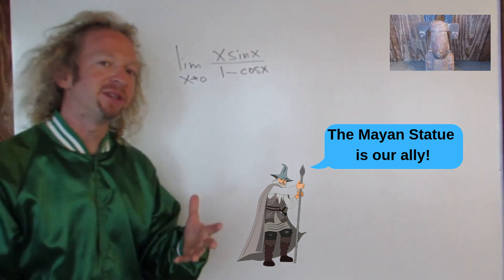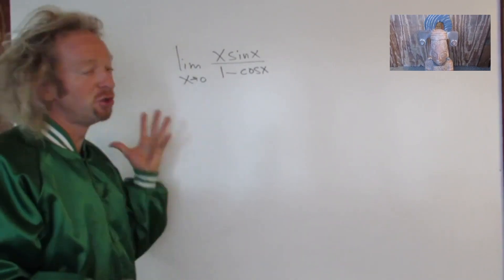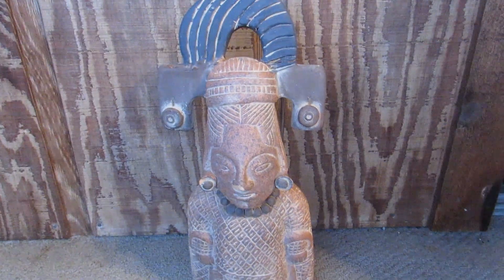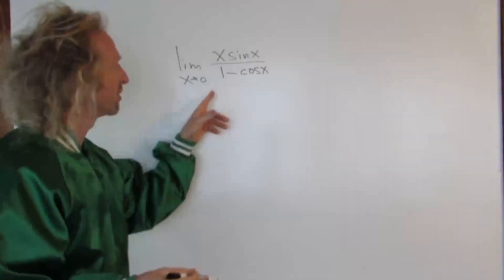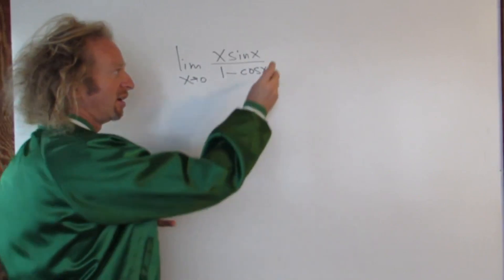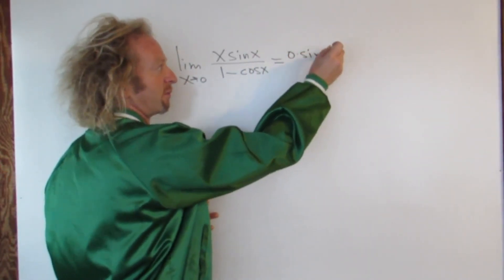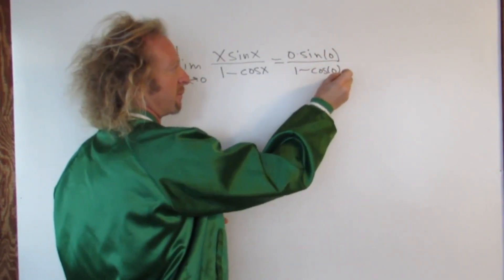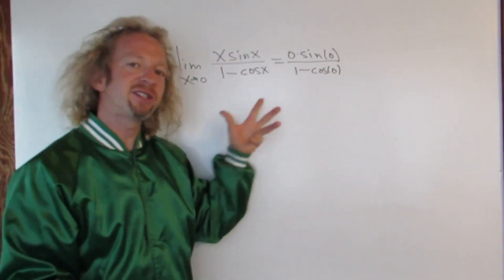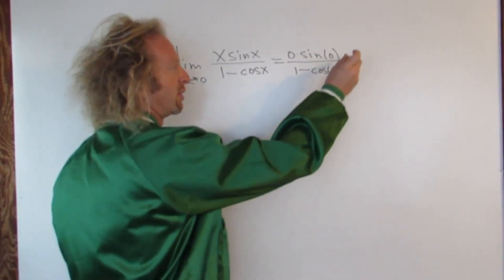Whenever you're taking limits, the first thing you should always do is plug in the number, just to see what happens. Because sometimes you can just plug in the number and you'll get the answer. So if you plug in zero here, you end up getting zero times the sine of zero over 1 minus cosine zero. Zero times the sine of zero is just zero.